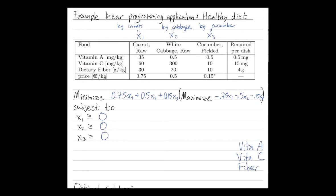What is the vitamin A constraint? Well, 35 times the amount of carrots plus 0.5 times the amount of cabbage plus 0.5 times the amount of pickles has to be at least the required amount. Our vitamin C constraint is 60 times the amount of carrots plus 300 times the amount of cabbage plus 10 times the amount of cucumbers has to be at least our 15 milligrams of vitamin C. And then our fiber constraint is that 30 times the amount of carrots plus 20 times the amount of cabbage plus 10 times the amount of cucumbers has to be at least our 4 grams of fiber.